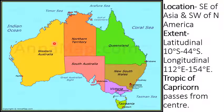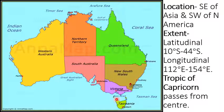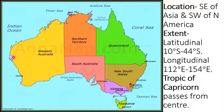Regarding its latitudinal and longitudinal extent: Australia lies to the south of the equator, so we use 'S' for latitude. Australia extends between 10 degrees south latitude to 44 degrees south latitude. As it lies to the east of the prime meridian, we use 'E' for longitude. Australia extends between 112 degrees east longitude to 154 degrees east longitude. The Tropic of Capricorn passes through the center of the continent of Australia.